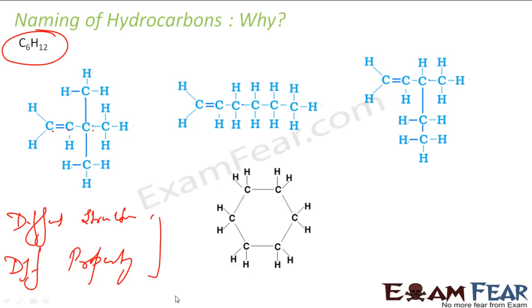There should be a name for this so that chemists can talk to each other with it. If a chemist says that he used C6H12 to react with something and got something, it won't be 100% clear to other chemists, because they may assume he is talking about this structure or that structure. He is not sure. So for all these, there should be a unique name to identify each hydrocarbon.